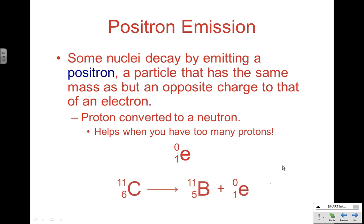Positron emission is one of two ways to solve a too-many-protons problem. A nuclei decays by emitting a positron — a particle with the same mass but opposite charge of an electron. What happens is a proton is converted to a neutron in the nucleus, and the positron is kicked out. The atomic number goes down by 1 — for example, carbon (atomic number 6) becomes boron (atomic number 5). The mass number doesn't change because we just converted a proton to a neutron. Checking: 5 plus 1 equals 6, confirming the positron (0 over 1), not a hydrogen atom which would show 1 over 1.